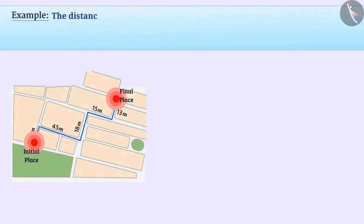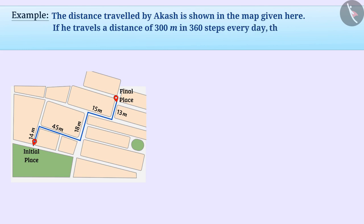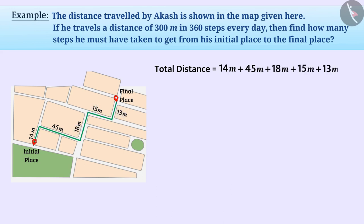Let's see another example. The distance travelled by Akash is shown in the map given here. If he travels a distance of 300 meters in 360 steps every day, then find how many steps he must have taken to get from his initial place to the final place. The total distance travelled is 14m + 45m + 18m + 15m + 13m, which equals 105 meters.